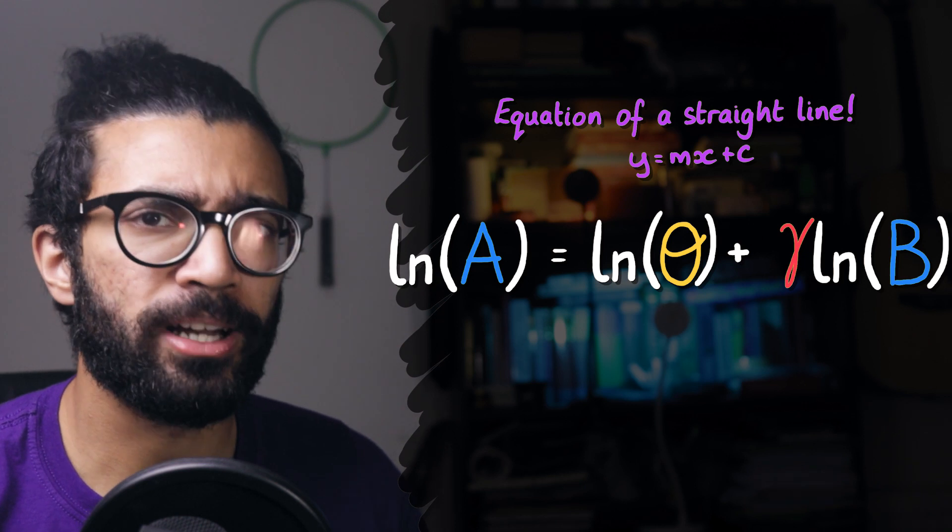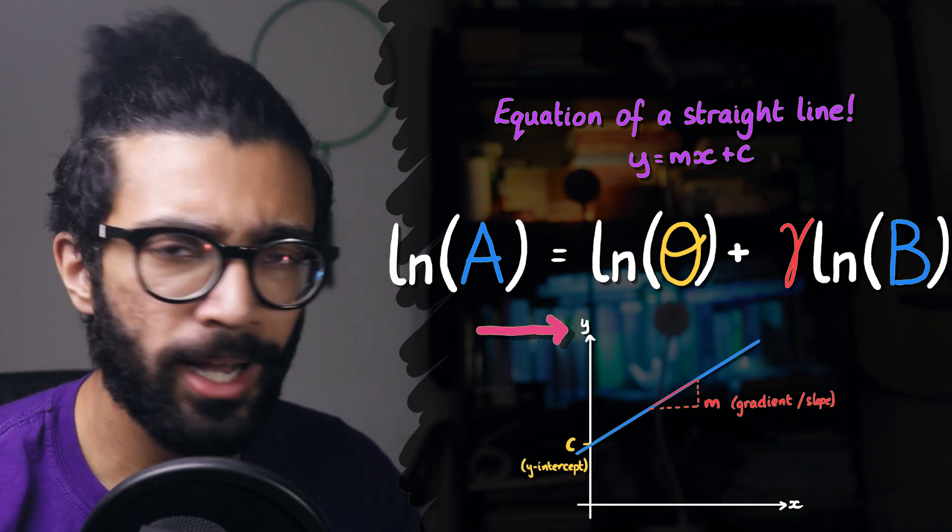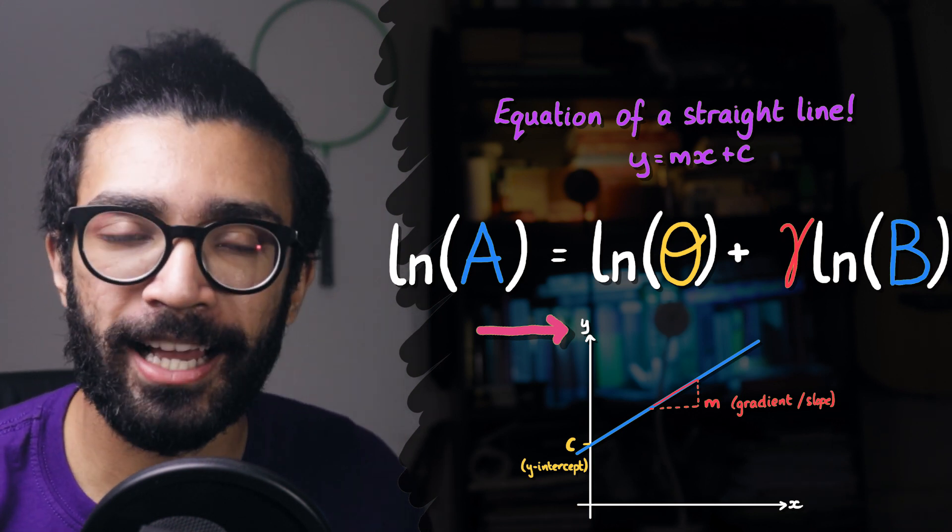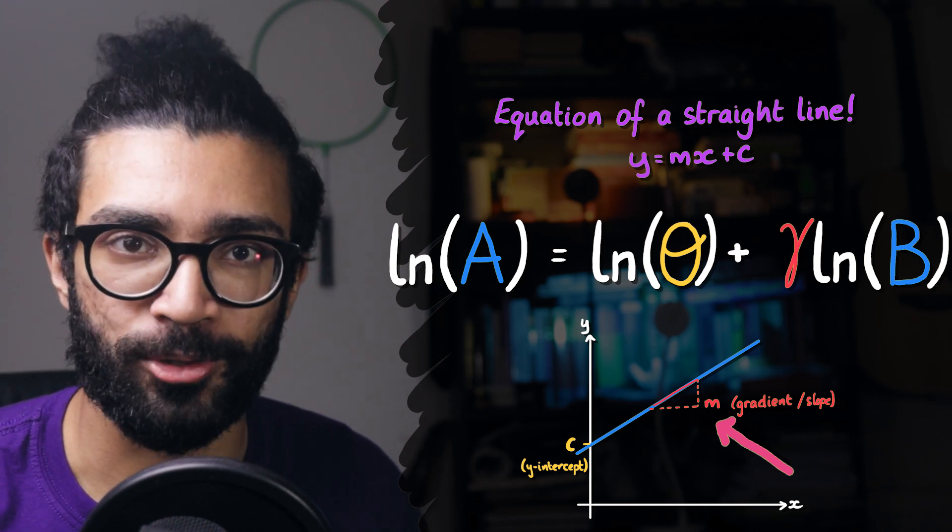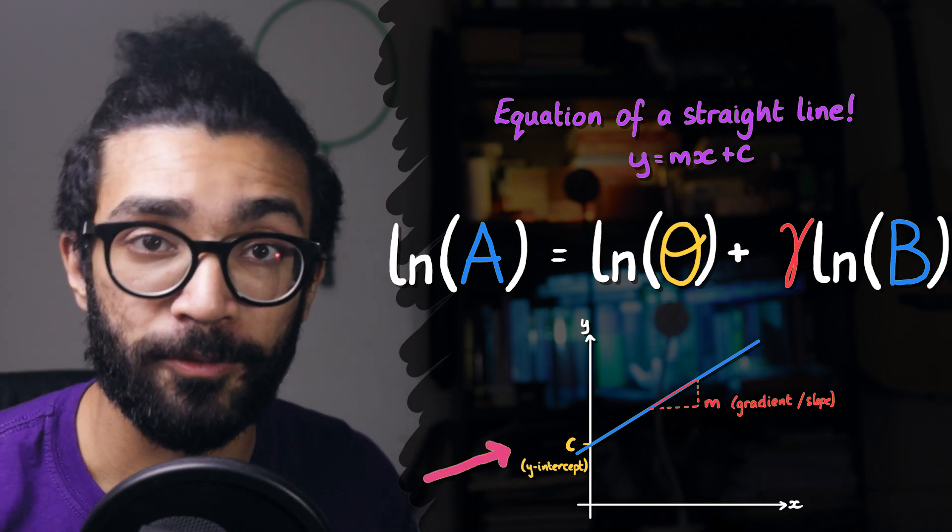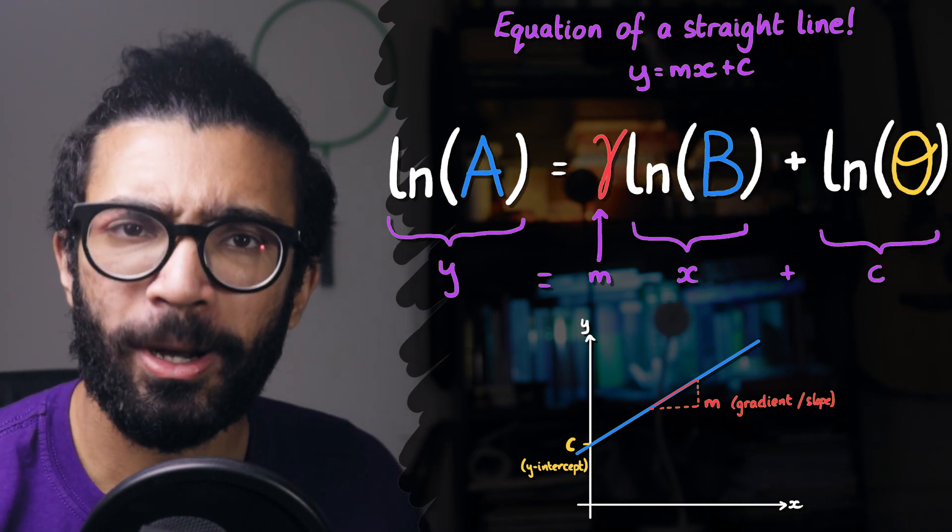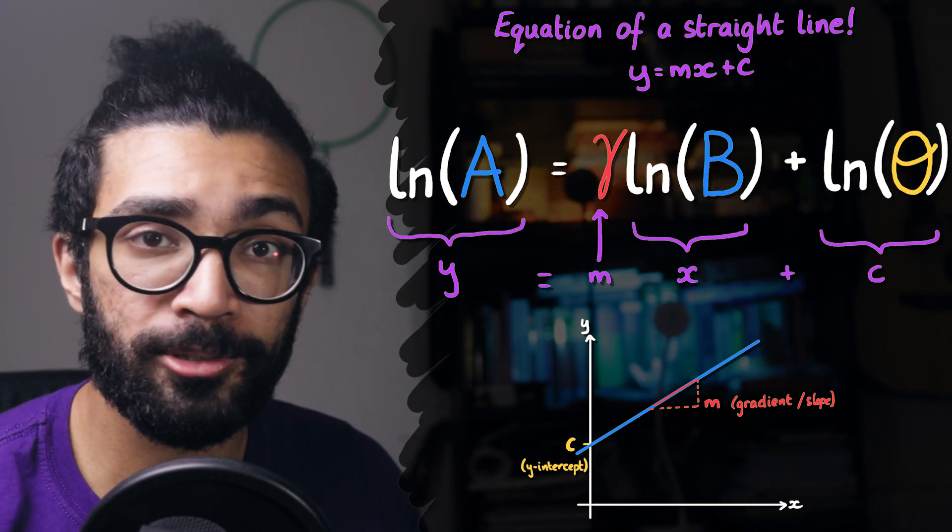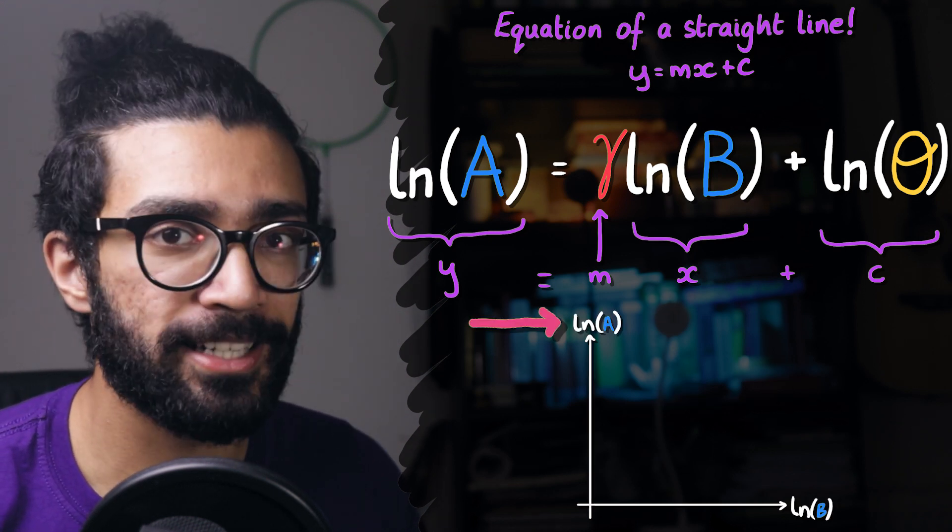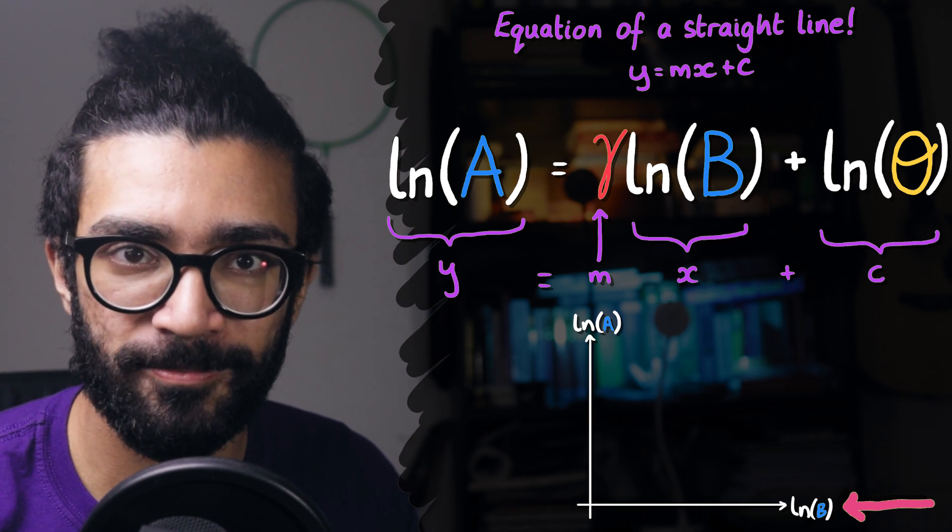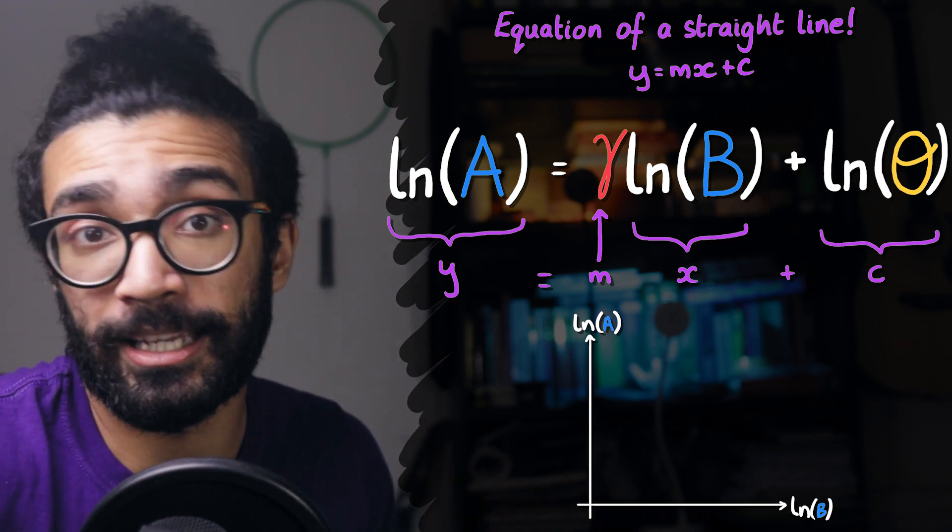Well, if you look closely at the equation we've got so far, you might be able to spot a slight similarity with the equation of a straight line. Now in the UK, the equation of a straight line is most commonly written as y is equal to mx plus c, where y is the variable plotted on the vertical axis, x is the variable plotted on the horizontal axis, m is the gradient or slope of the straight line, and c is the constant, often known as the y-intercept, the intercept along the vertical axis. And so by taking logarithms, we are able to plot a straight line if we plot the natural log of A on the vertical axis and the natural log of B on the horizontal axis, instead of plotting A against B or A against B squared or A against B cubed.